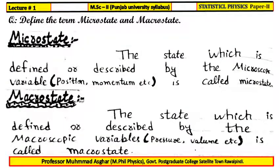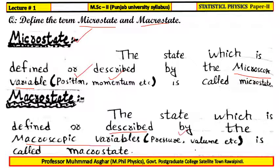Since there are two types of properties — microscopic and macroscopic — we define two corresponding states. A microstate is a state which is described by microscopic properties or microscopic variables, for example: position, momentum, etc. A macrostate is a state which is described by macroscopic variables such as pressure, volume, etc.